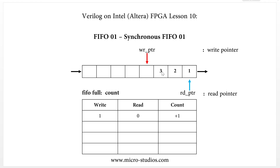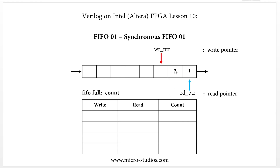The first action: we write one data item (value 3) into the FIFO. Previously this position was empty, and now we write one data in but we didn't read anything, so the read pointer still points to the first position — read is 0, write is 1. At this moment, the count value increases by one. Previously there were two data items inside, now we have three, so count increases by 1.